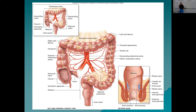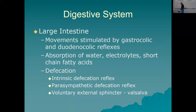The anal canal is lined by stratified squamous epithelium, and you can see the internal and external sphincters. Movement is stimulated by gastrocolic and duodenocolic reflexes: stretching of the stomach or duodenum stimulates the enteric nervous system, which sends signals along to the large intestine to contract. This makes sense — you put new stuff in, so you need to move the old stuff out.